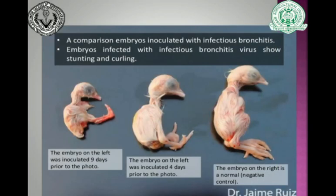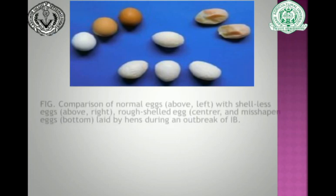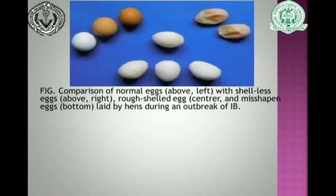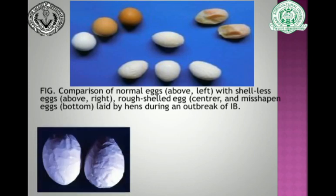A picture shows a comparison between a normal embryo as the negative control and two embryos infected by infectious bronchitis virus, both showing stunted growth and curling. Another image shows a comparison between three groups of eggs laid during an infectious bronchitis outbreak: normal eggs in the upper left, shell-less eggs in the upper right, rough-shelled eggs in the center, and wrinkled egg shells in a further picture.